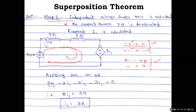Both equations give the same result. With the first convention: 24 − 3i1 − 2i1 − 3i1 = 0. With the second convention: −24 + 3i1 + 2i1 + 3i1 = 0. There is no difference — any convention gives the same answer, so there is no need to be confused.